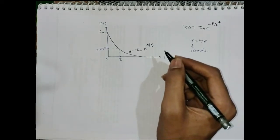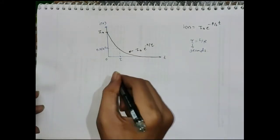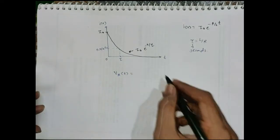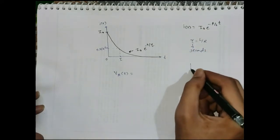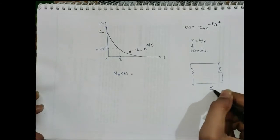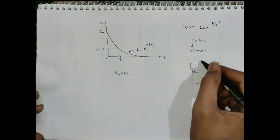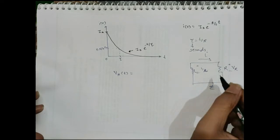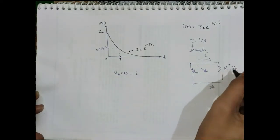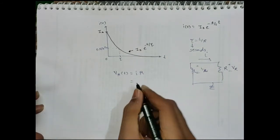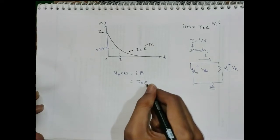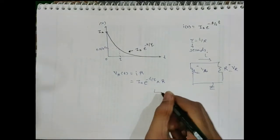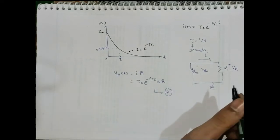If we want to find the voltage across the resistor V_R(t): since this is a series circuit, the current through both elements is the same I(t). Therefore V_R(t) = I(t) · R = I₀ · R · e^(−R/L · t). This is equation number 8 — the voltage across the resistor.